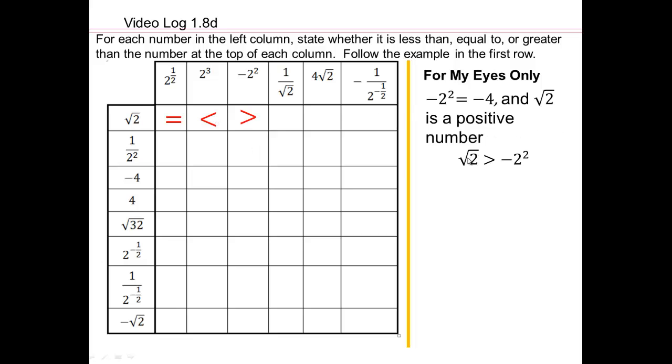Square root 2 is bigger than negative 2 squared. Why is that? Because this, negative 2 squared, 2 squared is 4. So this is negative 4. That's a negative number, positive number. Positive numbers are always bigger than negative numbers.